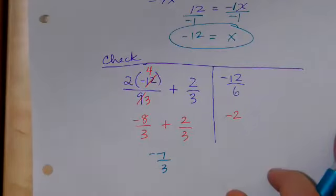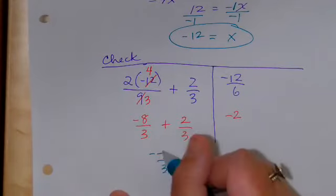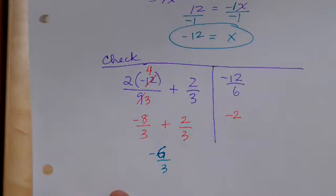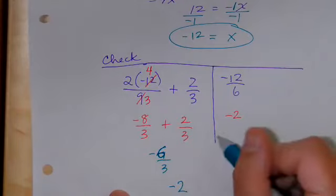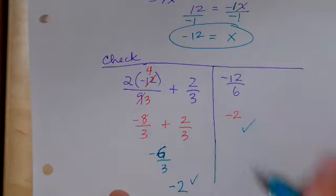Negative 6 thirds. Does negative 6 thirds reduce? Yes. To what? Negative 2. So the fact that we got negative 2 on both sides means that the solution, which is x equals negative 12, works. So we solved it correctly.